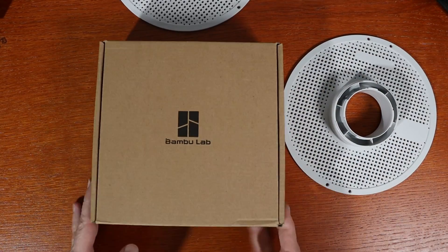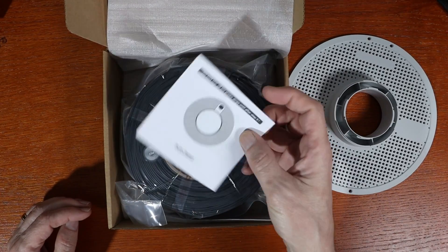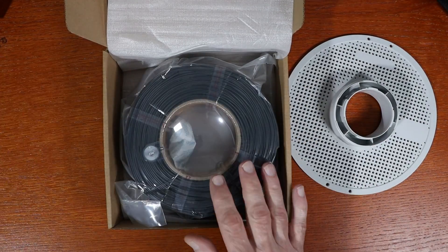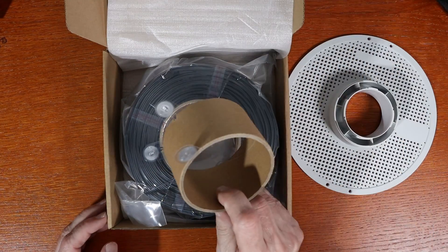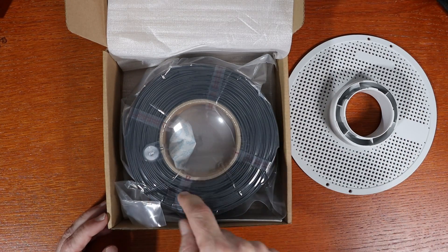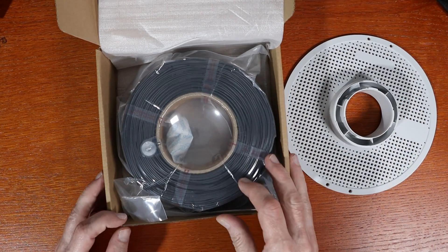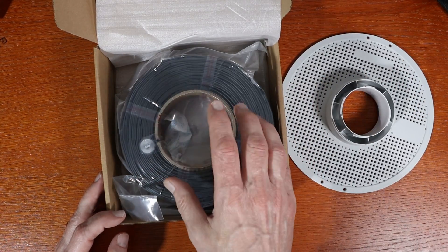So if we look at a refill, it has a comment in here about the RFID tag. It has instructions, etc. What you can see is that this has the same cardboard tube inside with new RFID tags that identify this material. This is also matte PLA, so when I put this on here it will know the color as well as the material.